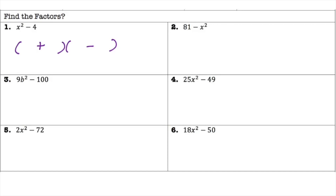Set up your parentheses with a plus and minus in between, then take the square root of both terms. The square root of x squared is x, and the square root of 4 is 2, so you get (x + 2)(x - 2). If you were finding roots you'd set each factor equal to zero, but here we're just factoring.